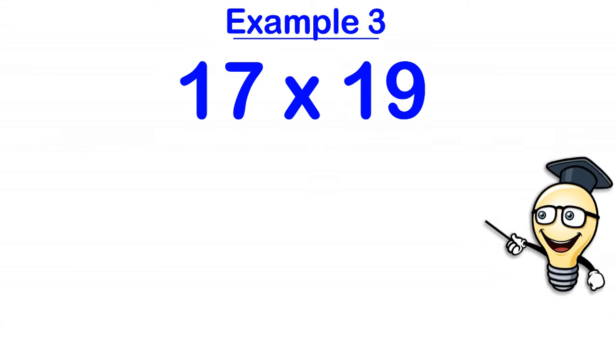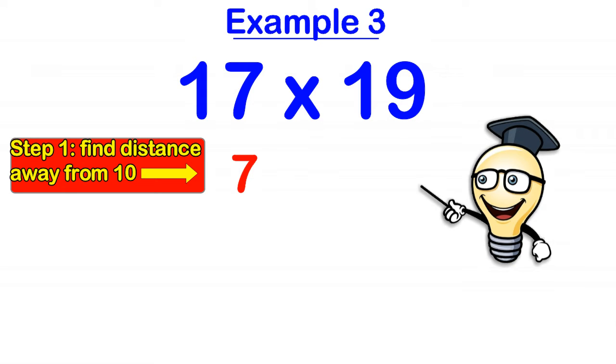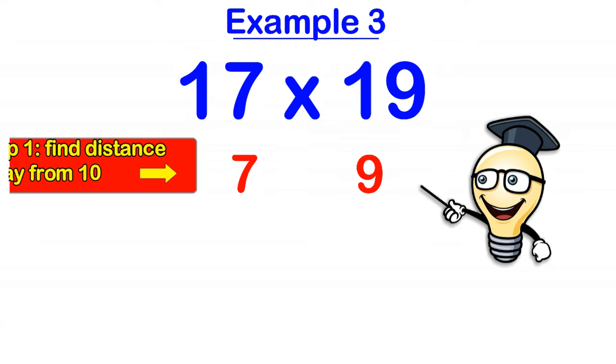Let's take a look at another example. Let's consider 17 times 19. So step 1, find out how far each number is away from 10. So the 17 is 7 digits away from 10 and 19 is 9 digits away from 10.